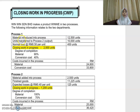In process one, material introduced into the process is 12,500 units. The units transferred to process two — that means this is your output — is 10,000 units. Then you have your normal loss: the scrap value is 50 cents per unit and the normal loss is given as 400 units.